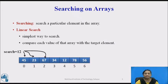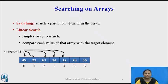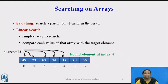Search continues and 12 is compared with the next element 34. 12 is not equal to 34. Continuing with the next element, 12 is compared with 12. Here the search element matches the array element. We found the search element in the array at index 4 in this example. If the not-found case occurs, the search element is compared with each element till the last element in the array.